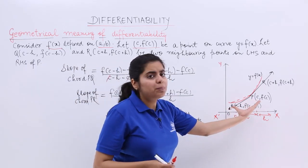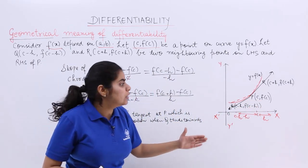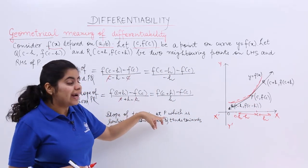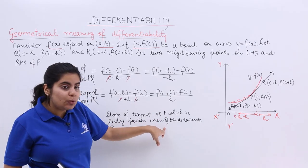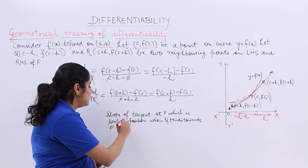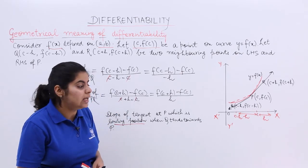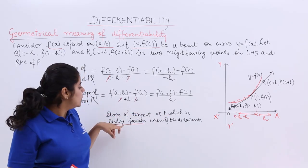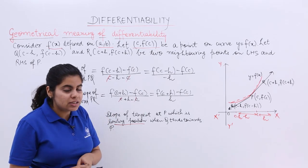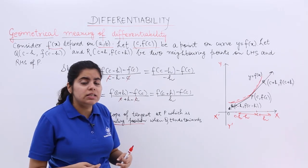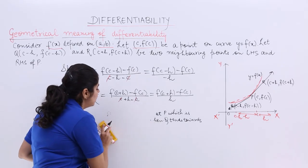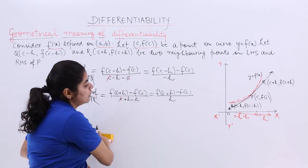The limiting case for chord PQ is when Q basically reaches very near to P. The slope of the tangent at P is the limiting position when Q tends towards P, and similarly when R tends towards P. For derivability, the left-hand derivative must equal the right-hand derivative.